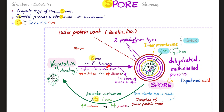Why does sporulation happen? An unfavorable environment — decreased nutrition, food scarcity, especially alanine. So the bacteria will kick every toxin and antibiotic out and will become a spore made of the layers that we talked about. Don't forget the calcium dipicolinic acid.